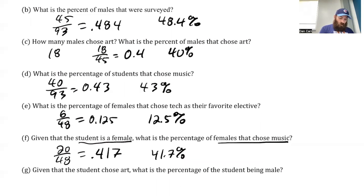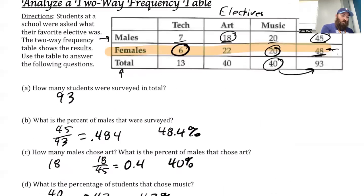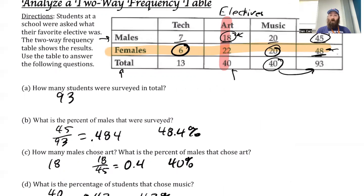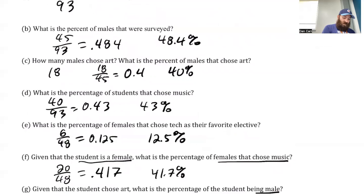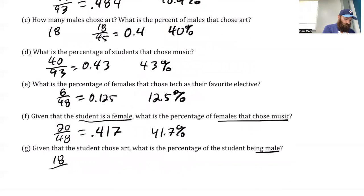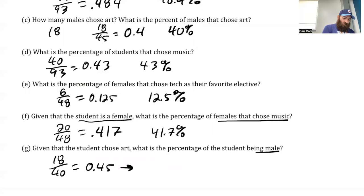Given that the student chose art, what is the percentage of the student being male? So the given is art, and art is going to be this column. It says what is the percentage of males? So that's 18 males out of the 40 total art students. So I've got 18 out of 40 for this one. I do that and I get 0.45. Multiply that by 100, I get 45%.